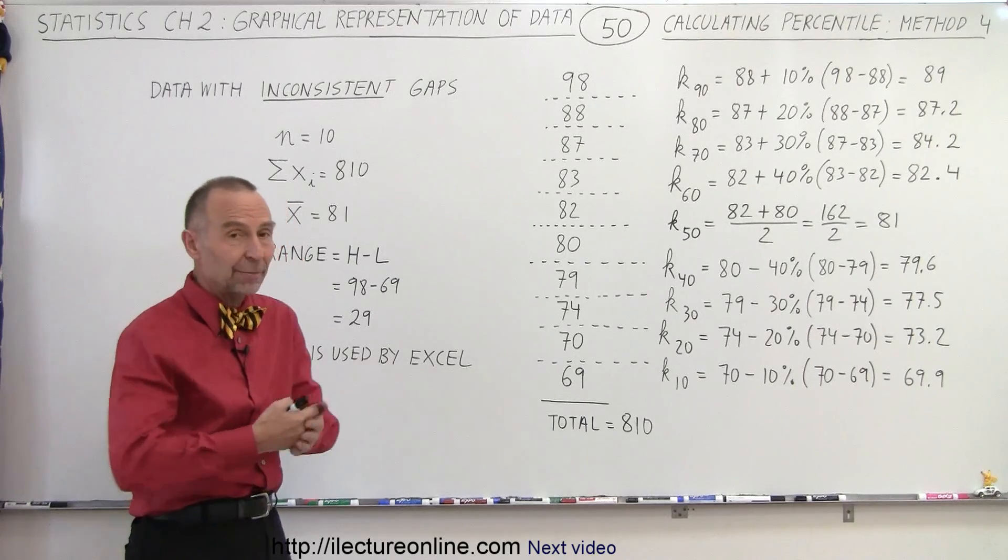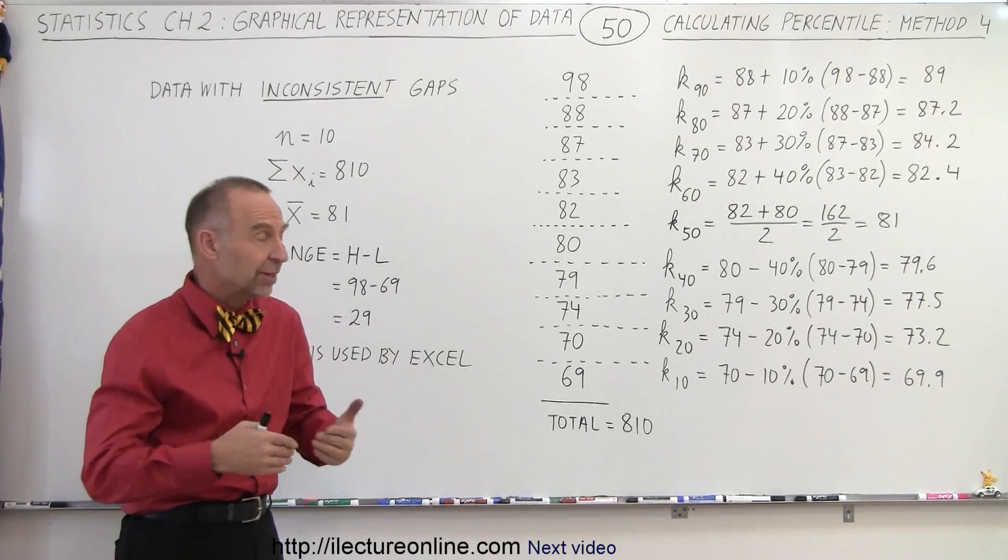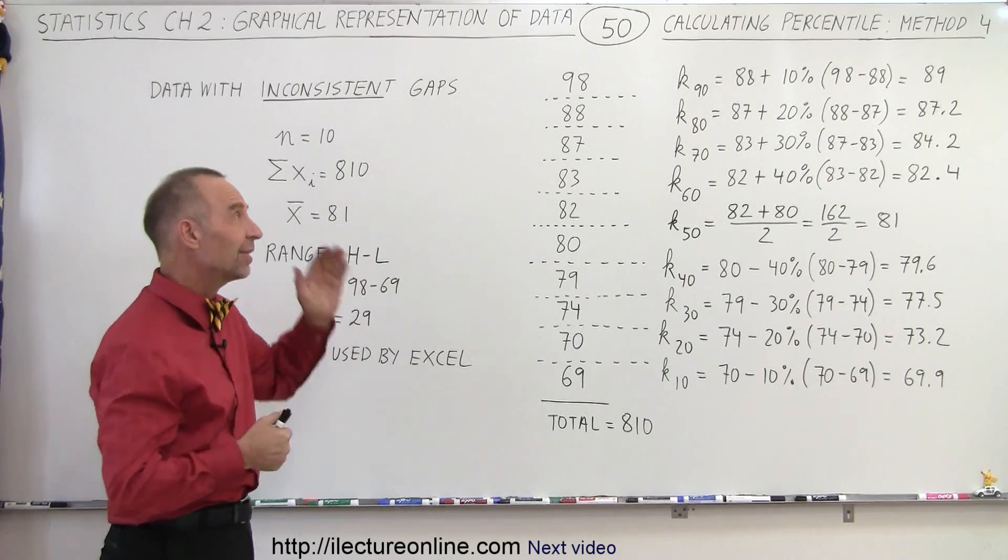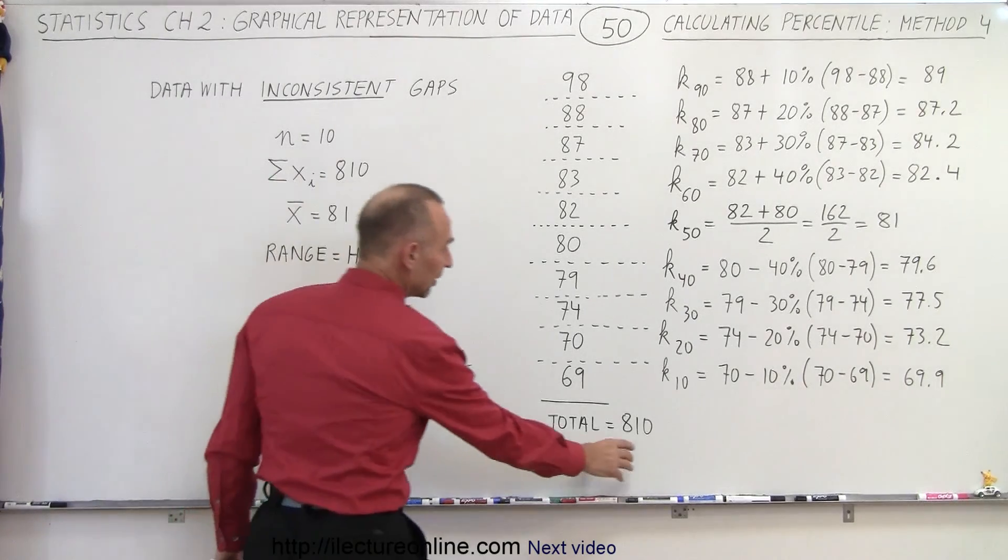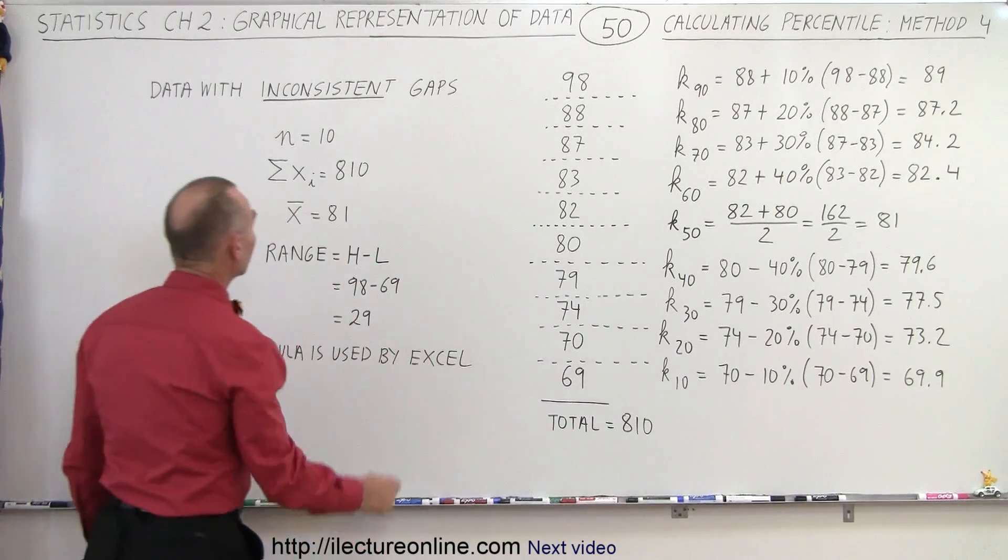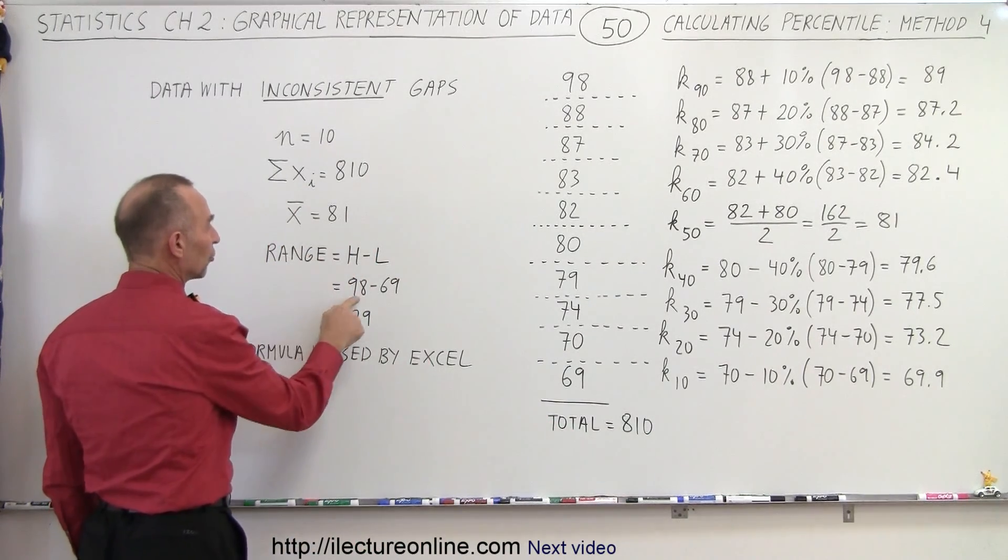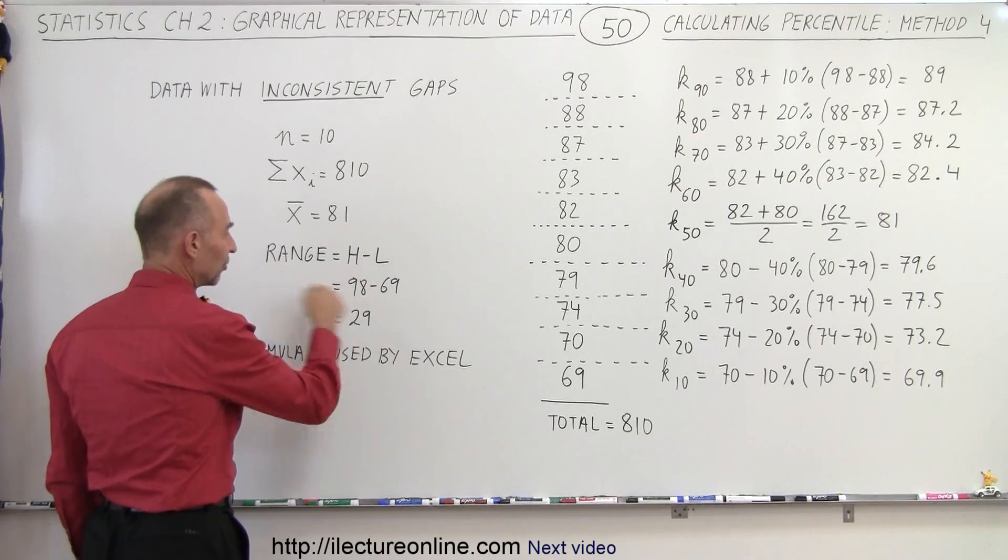So what is represented by the 10th percentile, the 20th percentile, and so forth, all the way up to the 90th percentile. So we have 10 data points. The total sum of all the data points is 810, so we can say that the average of the data points is 81. The range goes from 98 to 69, so a range of 29.